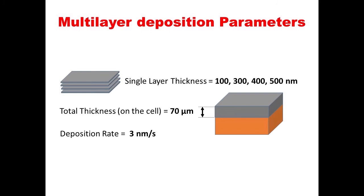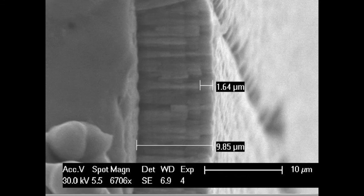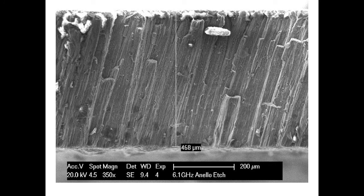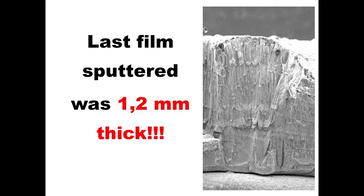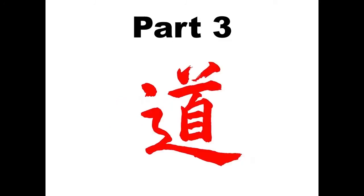These are the parameters we investigated. We made all films 70 microns thick, depositing cavities with different single-layer thicknesses of 100, 300, 400, and 500 nanometers. As an example, this is a 10-micron film where you can see the microstructure. This is a film 468 microns thick — about half a millimeter. More recently, we have sputtered films that are 1.2 millimeters thick. There is no limit to the thickness.